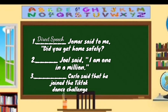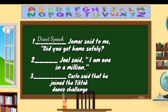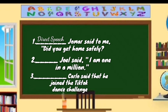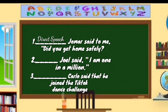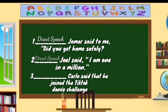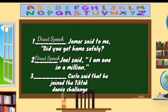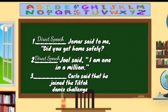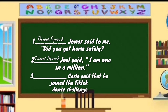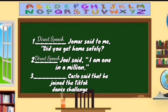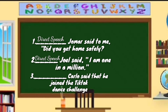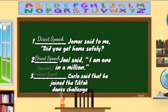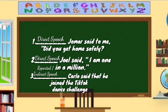Second question, blank — Jomar said, 'I am winning a million.' Again, it's a direct speech. For the third question, blank — Jomar said that he joined the TikTok dance challenge. Awesome! It's an indirect speech.